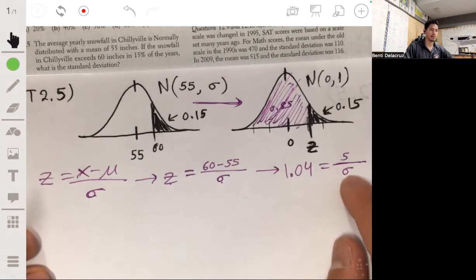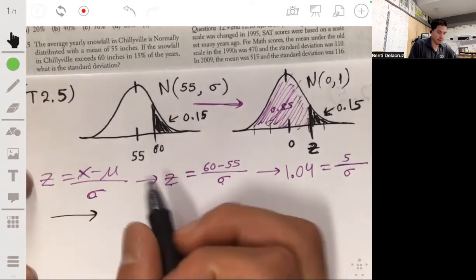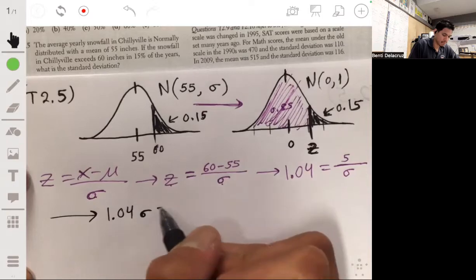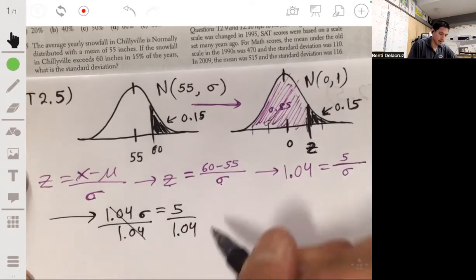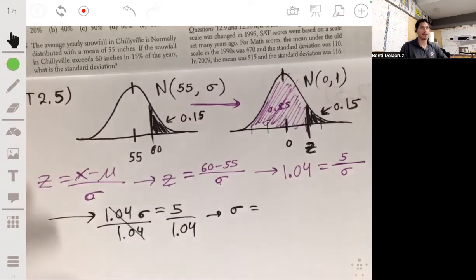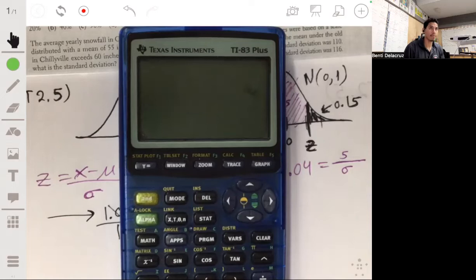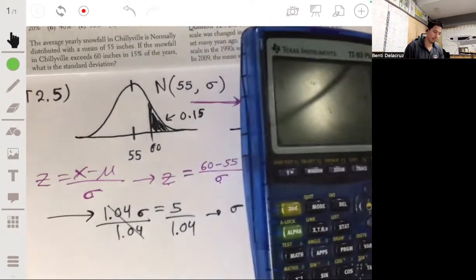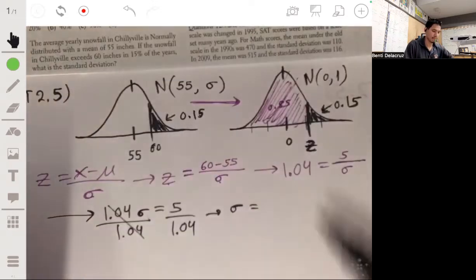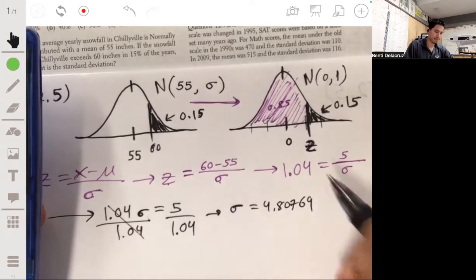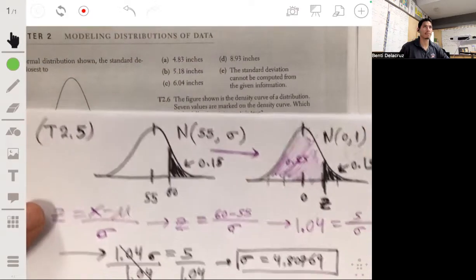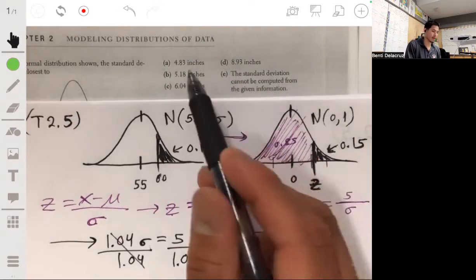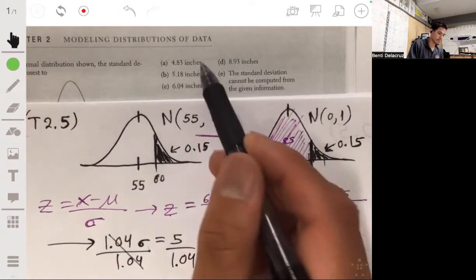Treat sigma just like a variable. We're going to multiply both sides by sigma, so we'll get 1.04 sigma equals 5. Divide both sides by 1.04, and I'll get that sigma, the standard deviation, is 4.80769. This is a multiple choice question, so let's look at the answers. The closest one looks like our answer will be A.